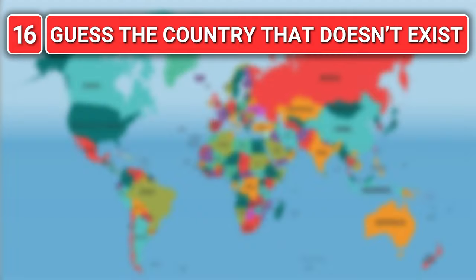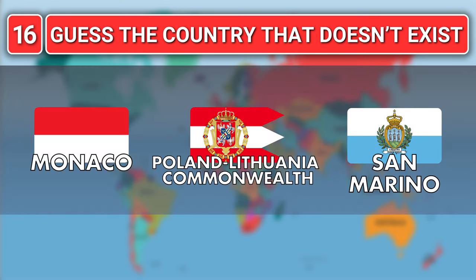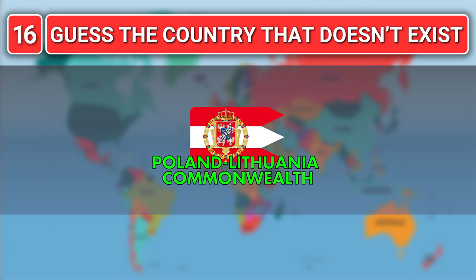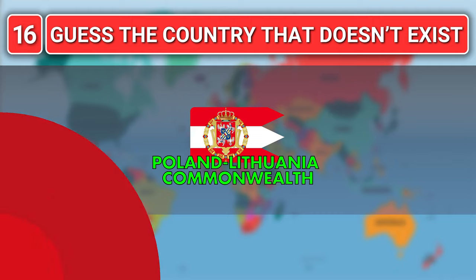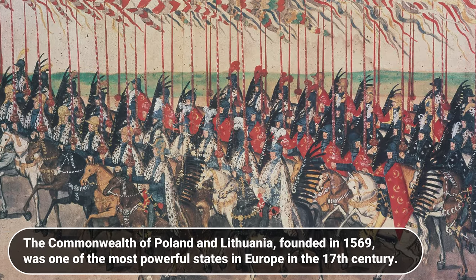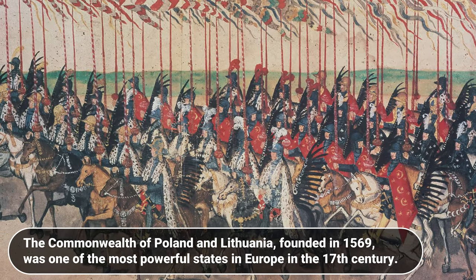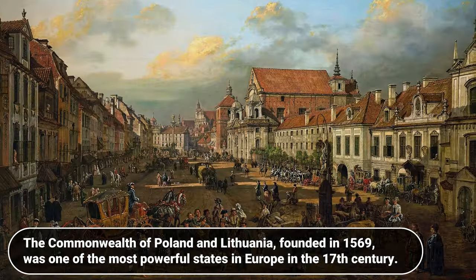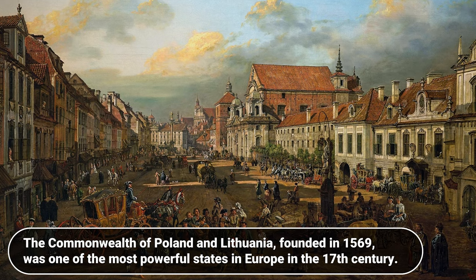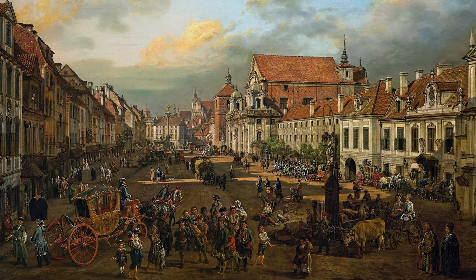Which country does not exist? Monaco, Poland-Lithuania Commonwealth or San Marino? The answer is Poland-Lithuania Commonwealth. The Commonwealth of Poland and Lithuania, founded in 1569, was one of the most powerful states in Europe in the 17th century.